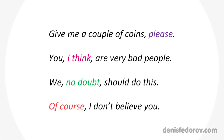We always put these words and others like them inside commas. In Russian, parenthetical words and expressions play a very important role in punctuation. Here are four common examples: 'Give me a couple of coins, please.' 'You, I think, are very bad people.' 'We, no doubt, should do this.' 'Of course, I don't believe you.' Those are English sentences with Russian punctuation applied. So we always put words like 'please' or 'maybe' inside an opening comma and a closing comma.